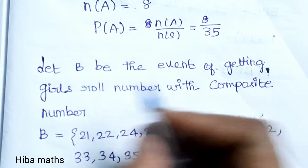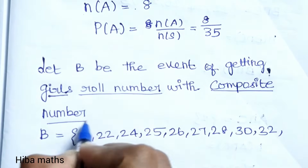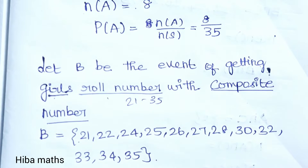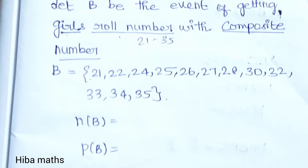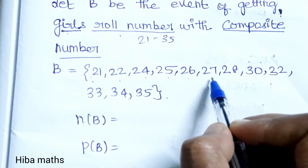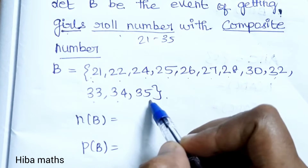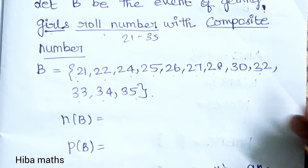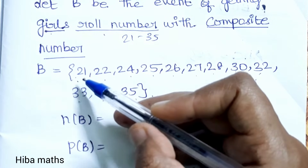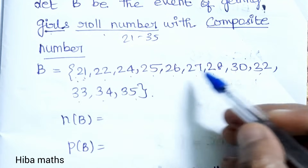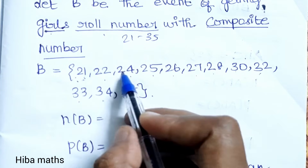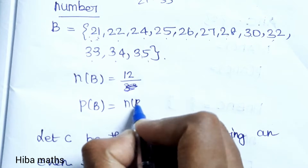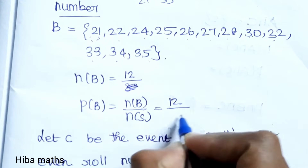Let B be the event of getting a girl's roll number with a composite number. Girls' roll numbers are 21 to 35. Composite numbers are not prime numbers — they have more than two factors. The composite numbers from 21 to 35 are: 21, 22, 24, 25, 26, 27, 28, 30, 32, 33, 34, 35. For example, 21 has factors 3, 7, and 1, giving 4 factors, so it is composite. Total composite numbers: 12. So P(B) = n(B) / n(S) = 12/35.